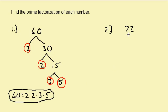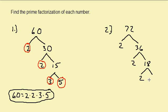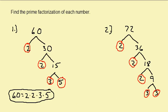Now let's take a look at 72. We can write 72 as 2 times 36. The 36 we can write as 2 times 18. The 18 we can write as 2 times 9. And the 9 we can write as 3 times 3. So now we have 2, 2, 2, 3, and 3. So 72 can be written as 2 times 2 times 2 times 3 times 3.